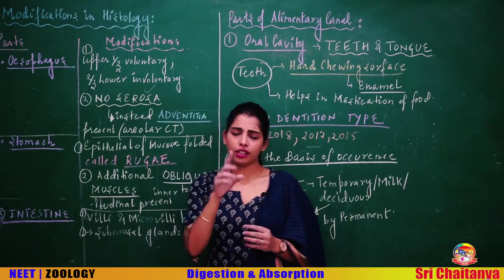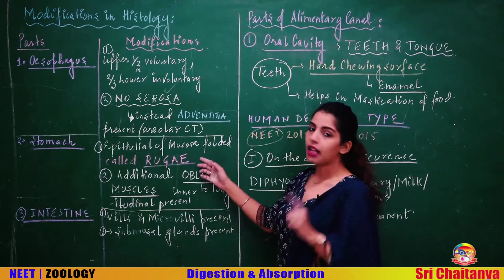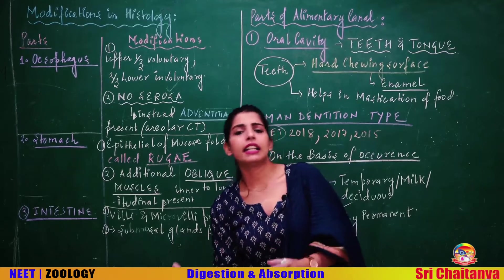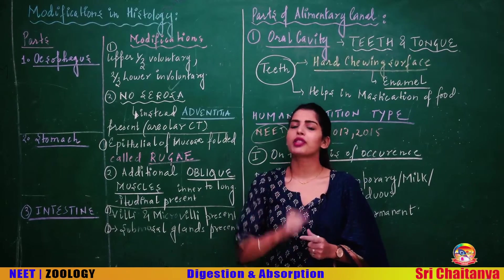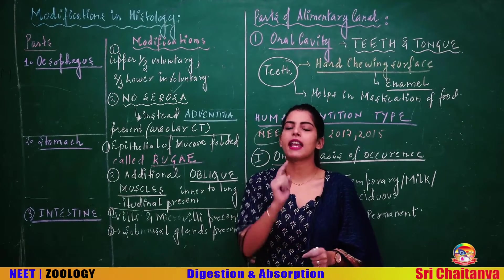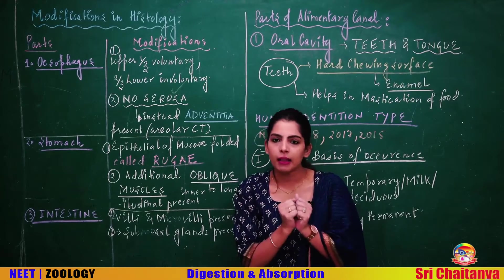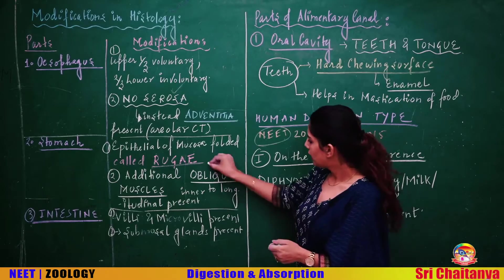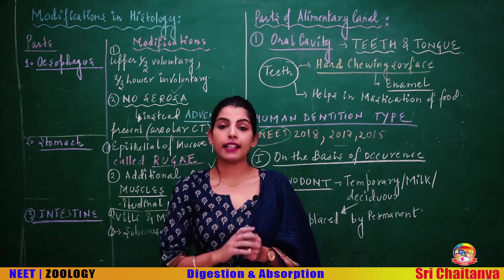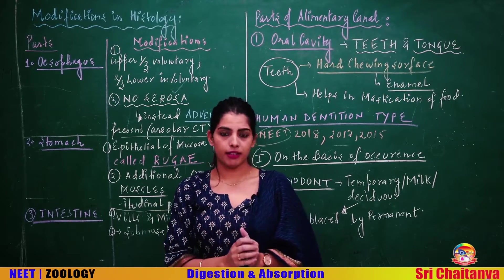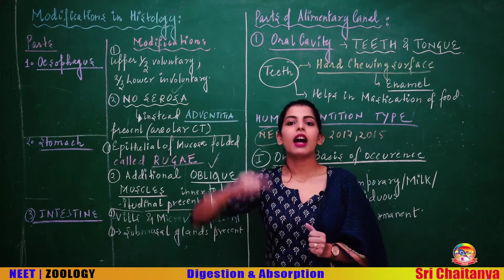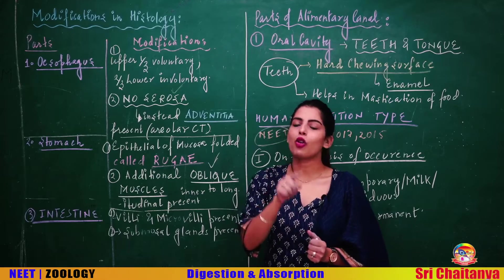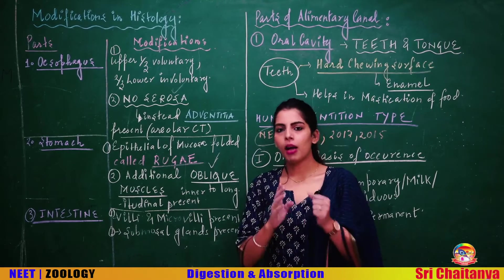There are some important modifications in the stomach. First is rugae — folds present in the innermost layer, the mucosa, specifically in the epithelial layer. When there is a folding in the mucosa, it is called rugae, and this is specific to the stomach. Also, the muscularis layer in the stomach has an additional modification: outer longitudinal, inner circular, and an innermost oblique muscle layer — a unique modification of the stomach.